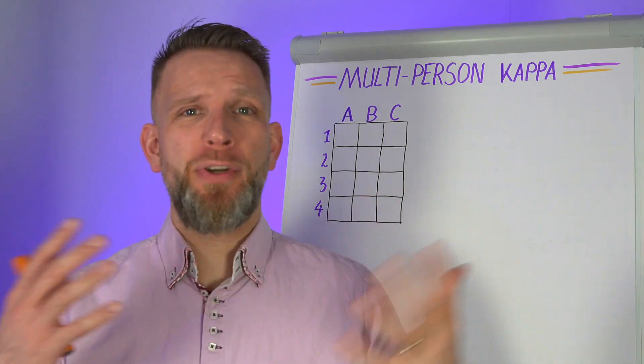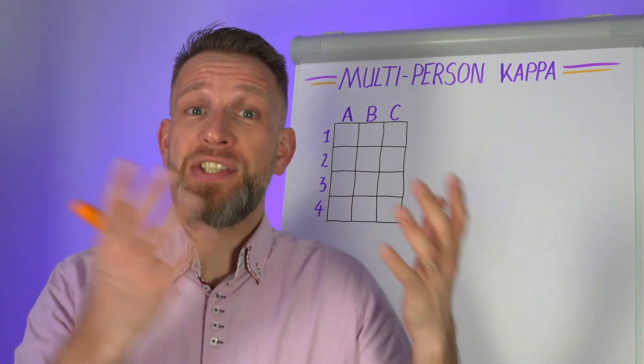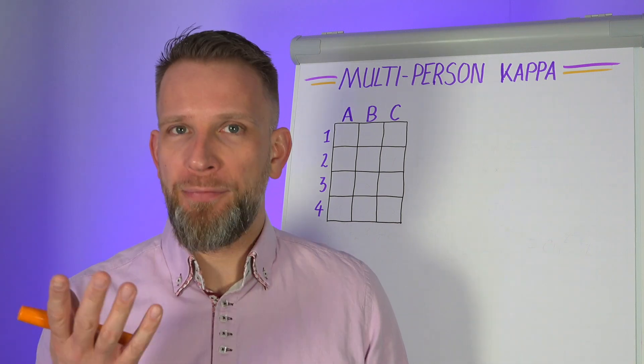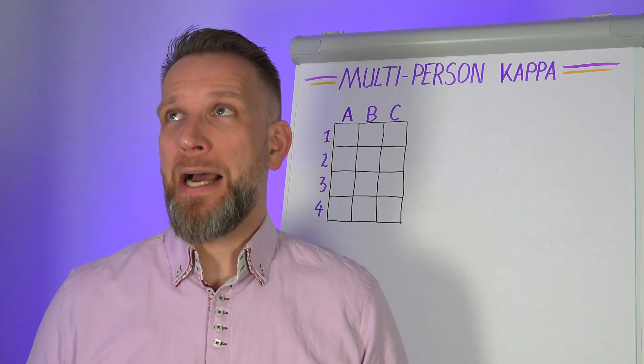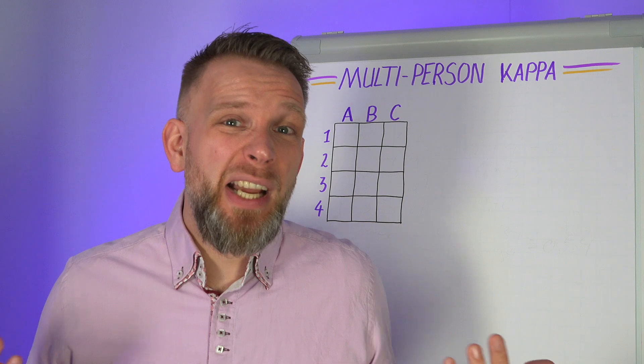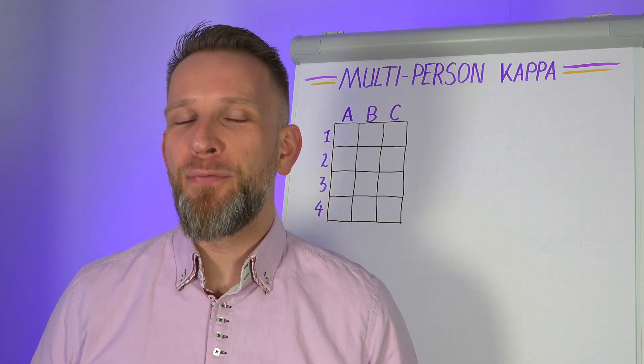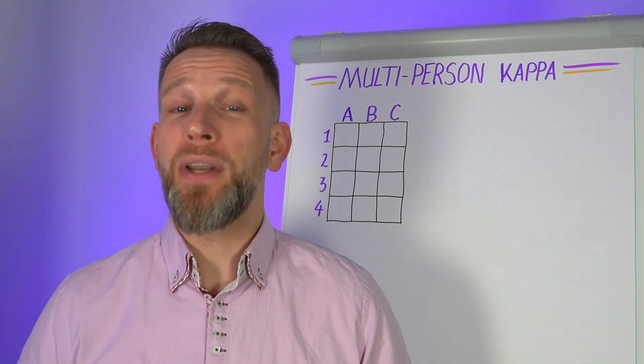When you want to know if two of your quality assessors would give the same ranking to the same product, and often you would like to know that for sure, then you use Cohen's Kappa. But what if you got five or six people that should give the same answer? There's a different way for that and let's discuss that one in this video.